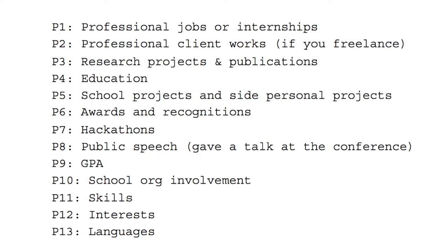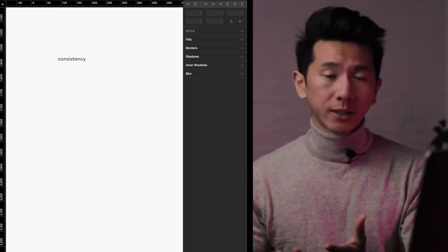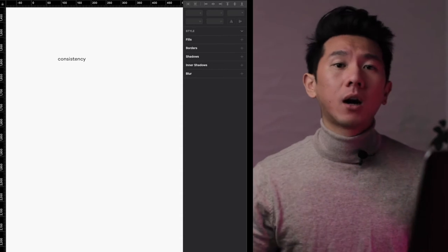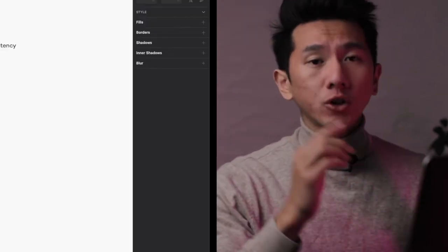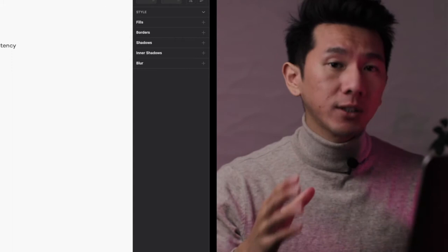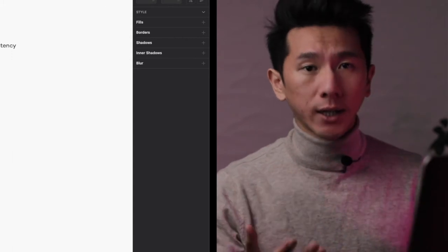If you remember from my '13 things to include in your resume' video, that basically tells you there are different sections of information like education, projects, experiences. Each of these has multiple layers of information, which leads us to the importance of hierarchy. What is the hierarchy one, two, three for this section? That should be the question you're asking for every section you're writing on your resume.